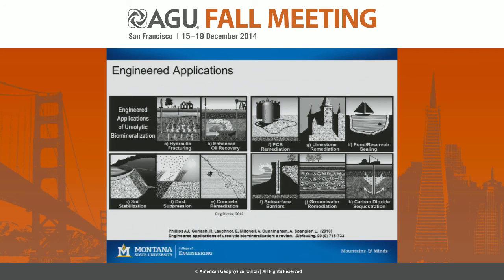In response to a question about temperature limitations: these microbes are called mesophiles — they only like medium temperatures, so this would be limited to about 40 degrees C. We are currently looking for microbes that can exist under higher temperature conditions. There's also the idea of utilizing just the pure urease enzyme as an alternative, as enzymes can last to higher temperatures.